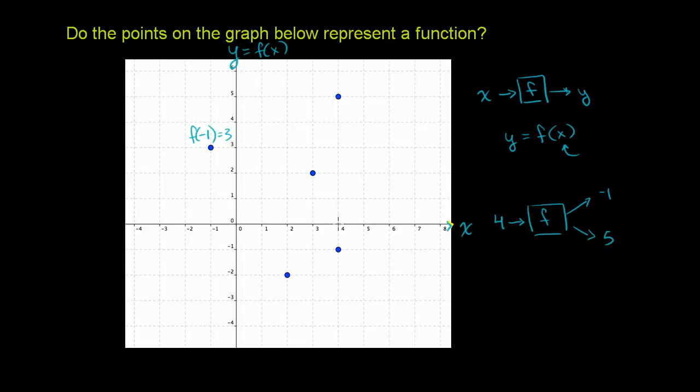It is mapping the value 4 to two values. That is not allowed for a function. A function has to map from a value to only one other value. So the points on the graph below do not represent a function. So I'll just write a no here.